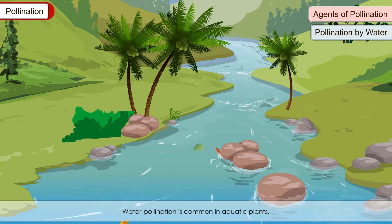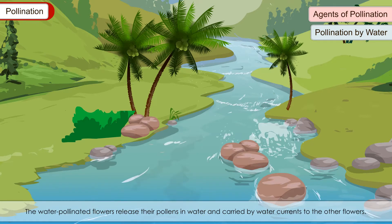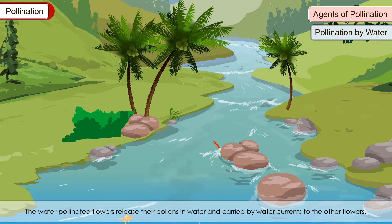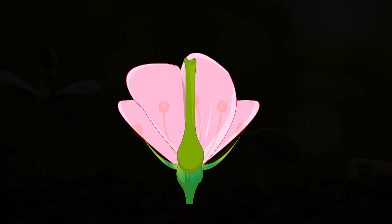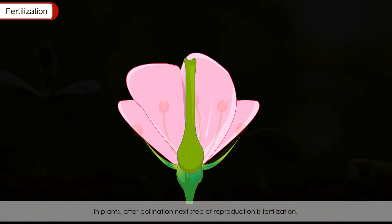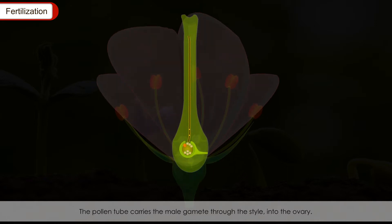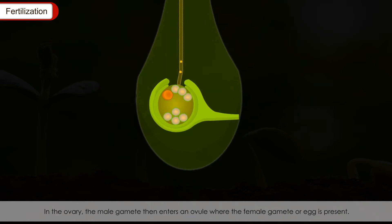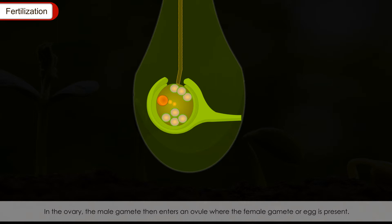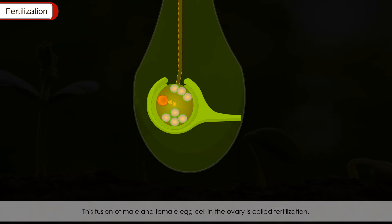Pollination by water: Water pollination is common in aquatic plants. Water-pollinated flowers release their pollens in the water, which are carried by water currents to other flowers — for example, seagrasses and Vallisneria. Fertilisation: After pollination, the next step is fertilisation. The pollen grain sticks to the stigma and develops a pollen tube, which grows downwards through the style into the ovary. There, the male gamete enters an ovule where the female gamete or egg is present. The male and female gametes fuse together to form the fertilised egg or zygote — this fusion is called fertilisation.